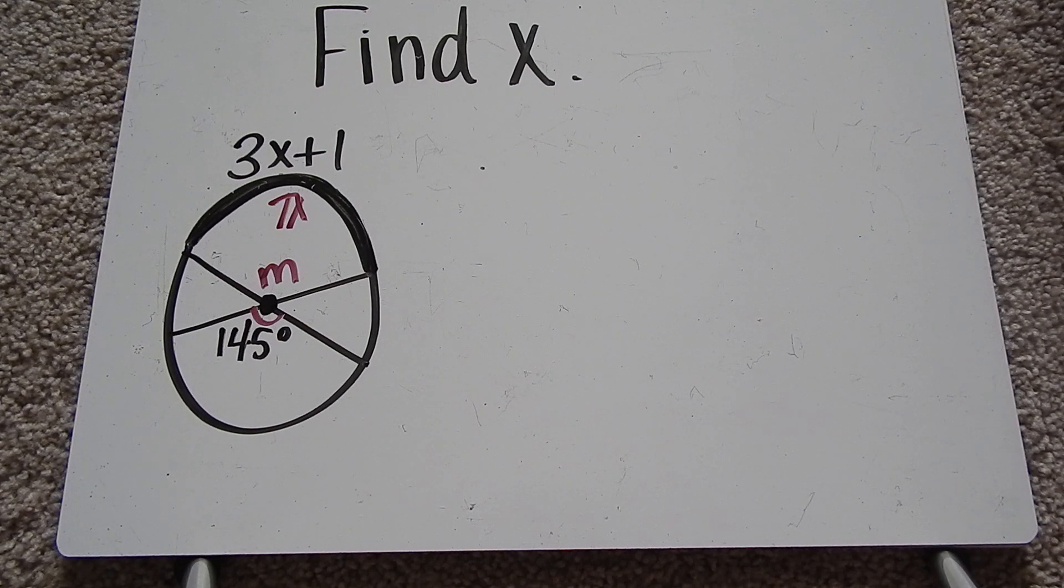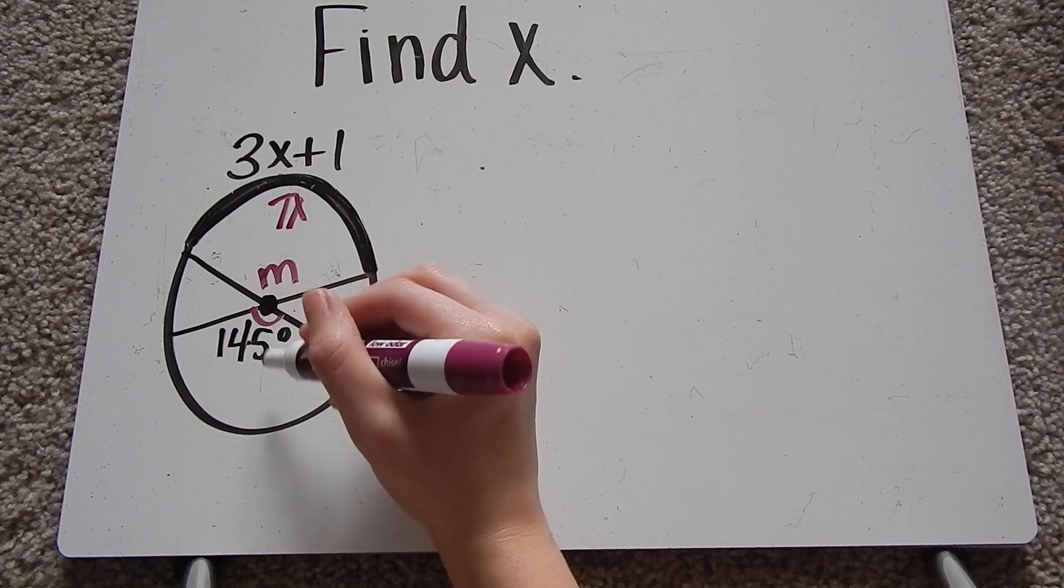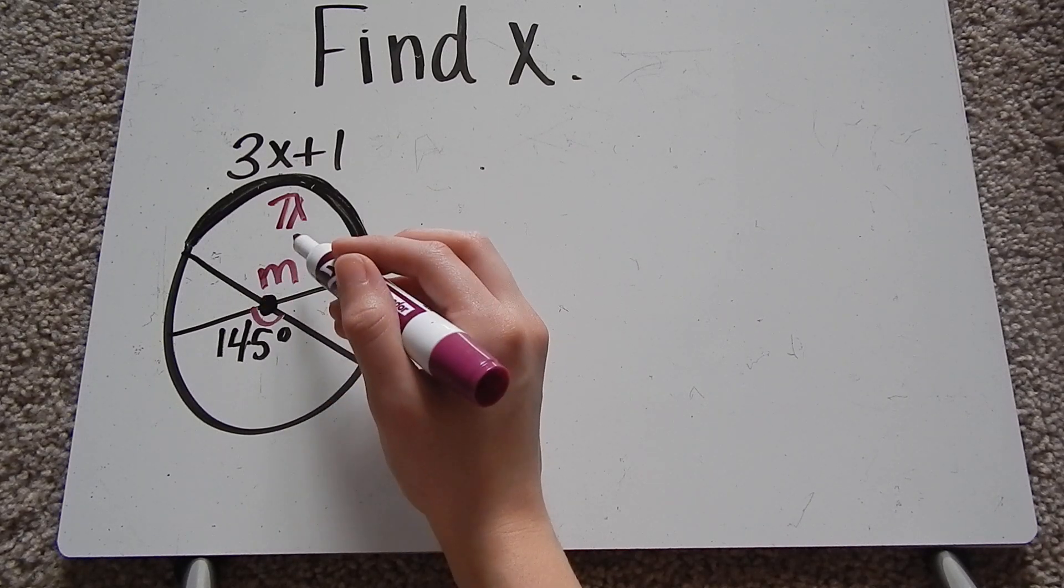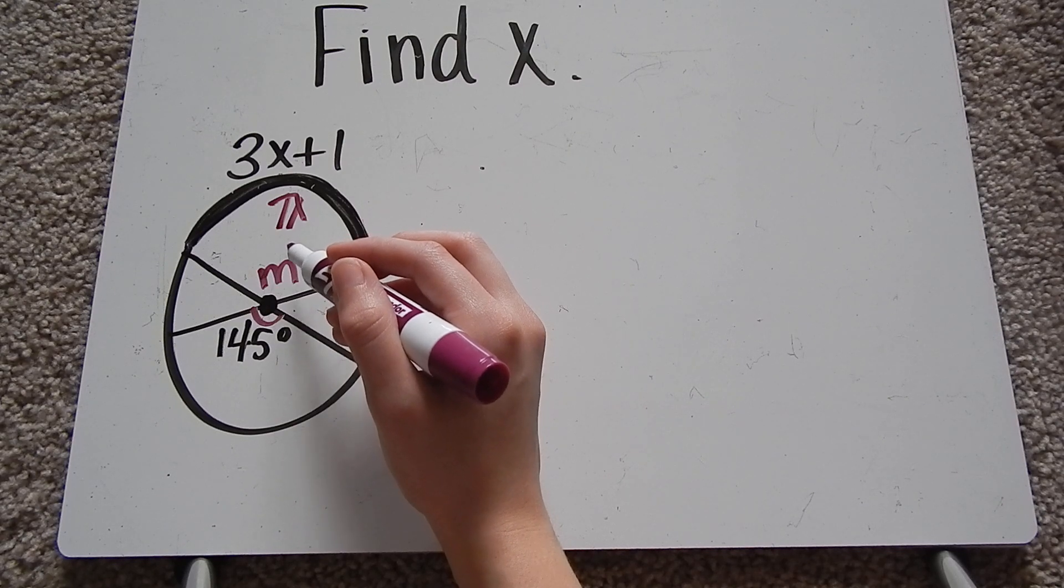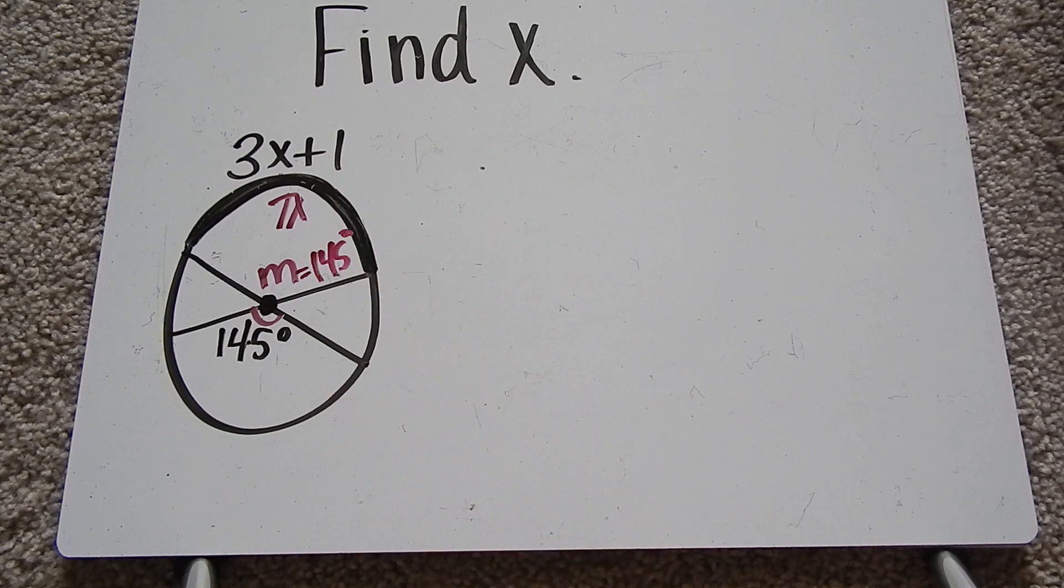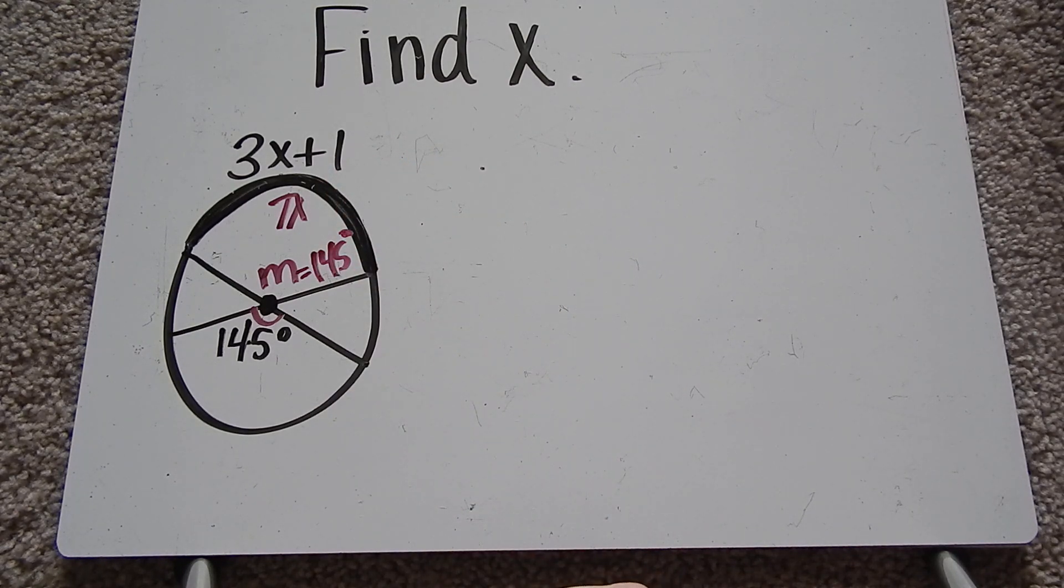We also know, and this is where everything we've learned before comes into play. We also know that these are vertical angles. Remember, vertical angles are equal to each other. So m is actually 145 degrees as well. Again, because we know those are vertical angles and that's the definition of vertical angles.